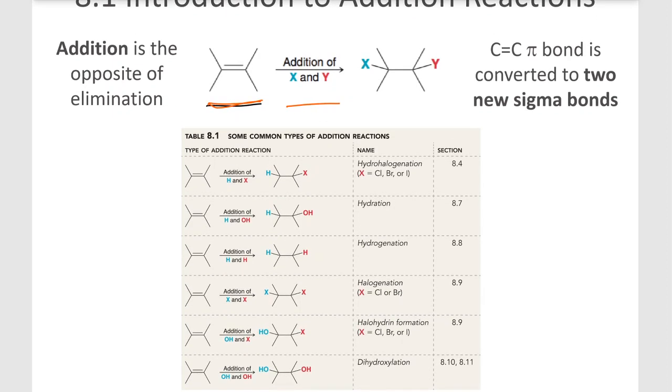So all of these are addition reactions. We've got, in the first case, addition of H and X or a halo acid across the double bond for hydrohalogenation. In the next reaction, we've got H and OH, which is hydration. In the next, we've got H and H, which is hydrogenation. That probably sounds a little bit familiar to you. Then we've got X and X, which is halogenation.